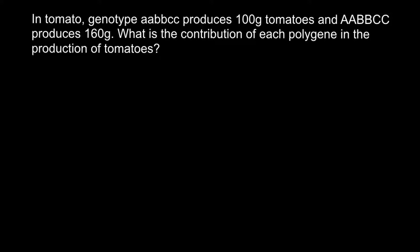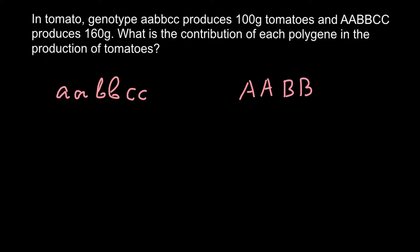The first genotype is: small a small a, small b small b, and small c small c. The other one is capital A capital A, capital B capital B, and capital C capital C. The first genotype produces plants with fruit that weighs 100 grams, and the second genotype produces plants with fruits that weigh 160 grams.